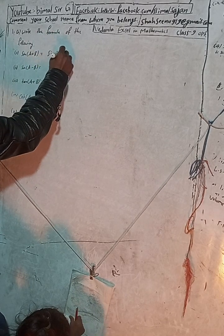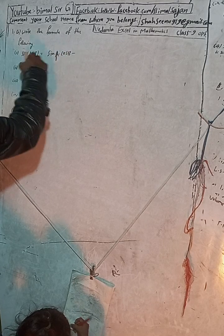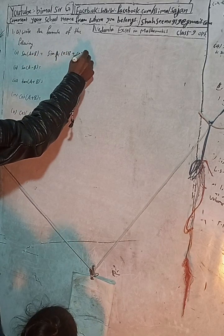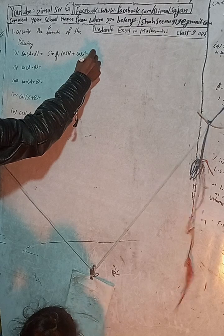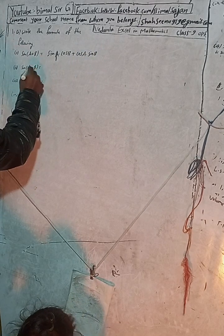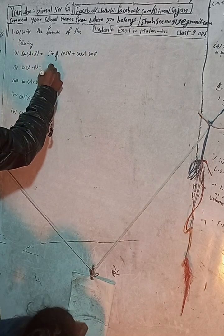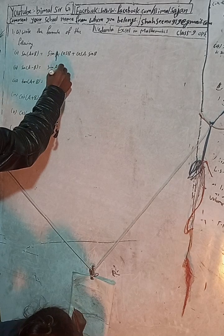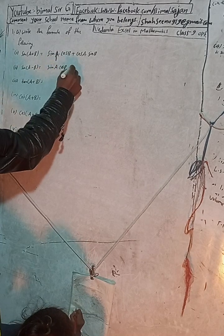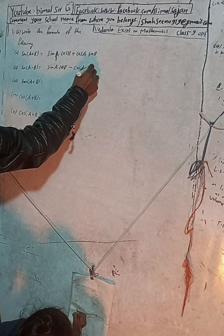Write the formula of the following. So sin(A + B) formula is what? sin A cos B and there is plus, plus cos A sin B. And sin(A - B) is equal to sin A cos B, this is minus, minus cos A sin B.